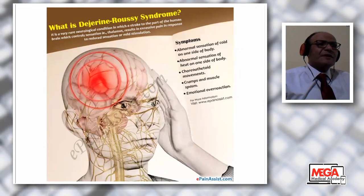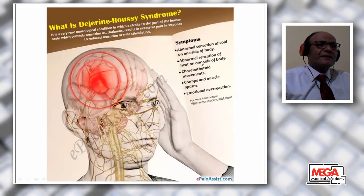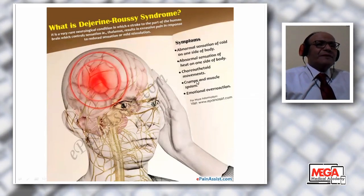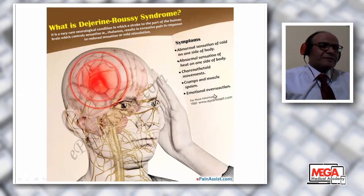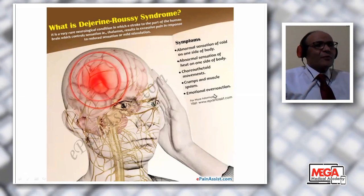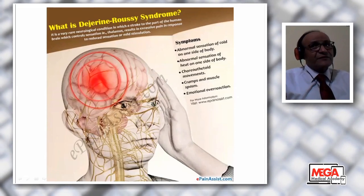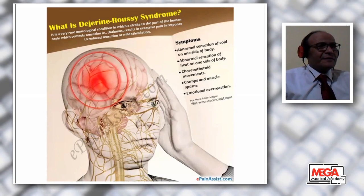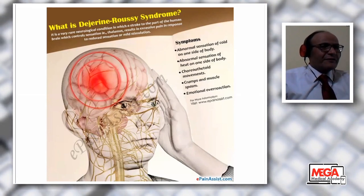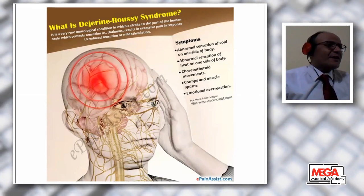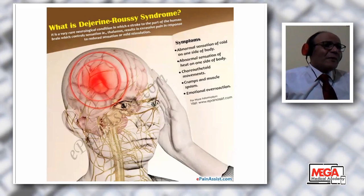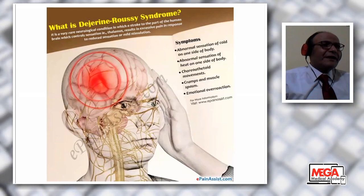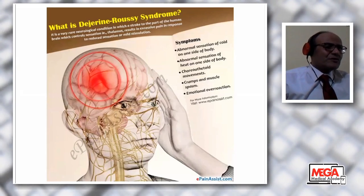The symptoms of central post-stroke pain syndrome include abnormal sensations of cold or heat on one side of the body, abnormal movements, cramps and muscle pain, and emotional overreaction. This syndrome is very important to diagnose after stroke and to properly treat with drugs and other interventions. We must keep in mind that some cases of cerebral stroke can lead to this chronic post-stroke pain syndrome.